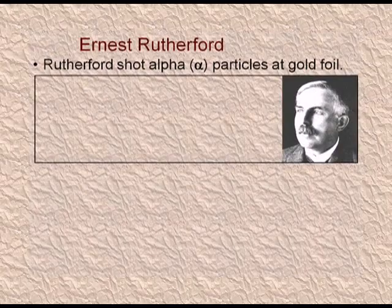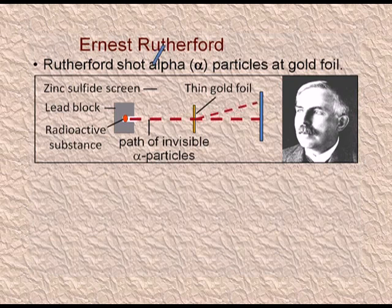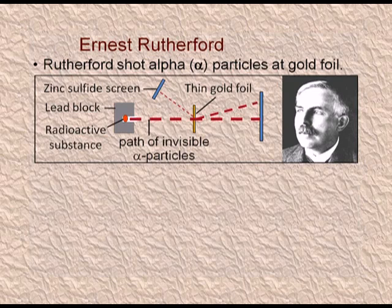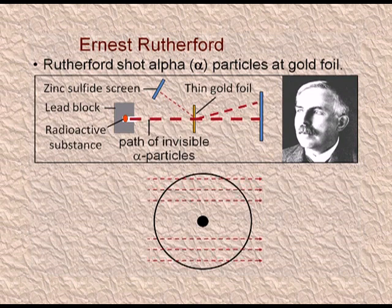Rutherford performed the alpha particle scattering experiment. He bombarded alpha particles on a thin gold foil and observed the pattern on a zinc sulphide plate. Alpha particles are positively charged. Rutherford observed that most alpha particles passed straight through the gold foil, but a few experienced some deflection through a small angle, and approximately one in 20,000 bounced back — deflected by an angle of 180 degrees.